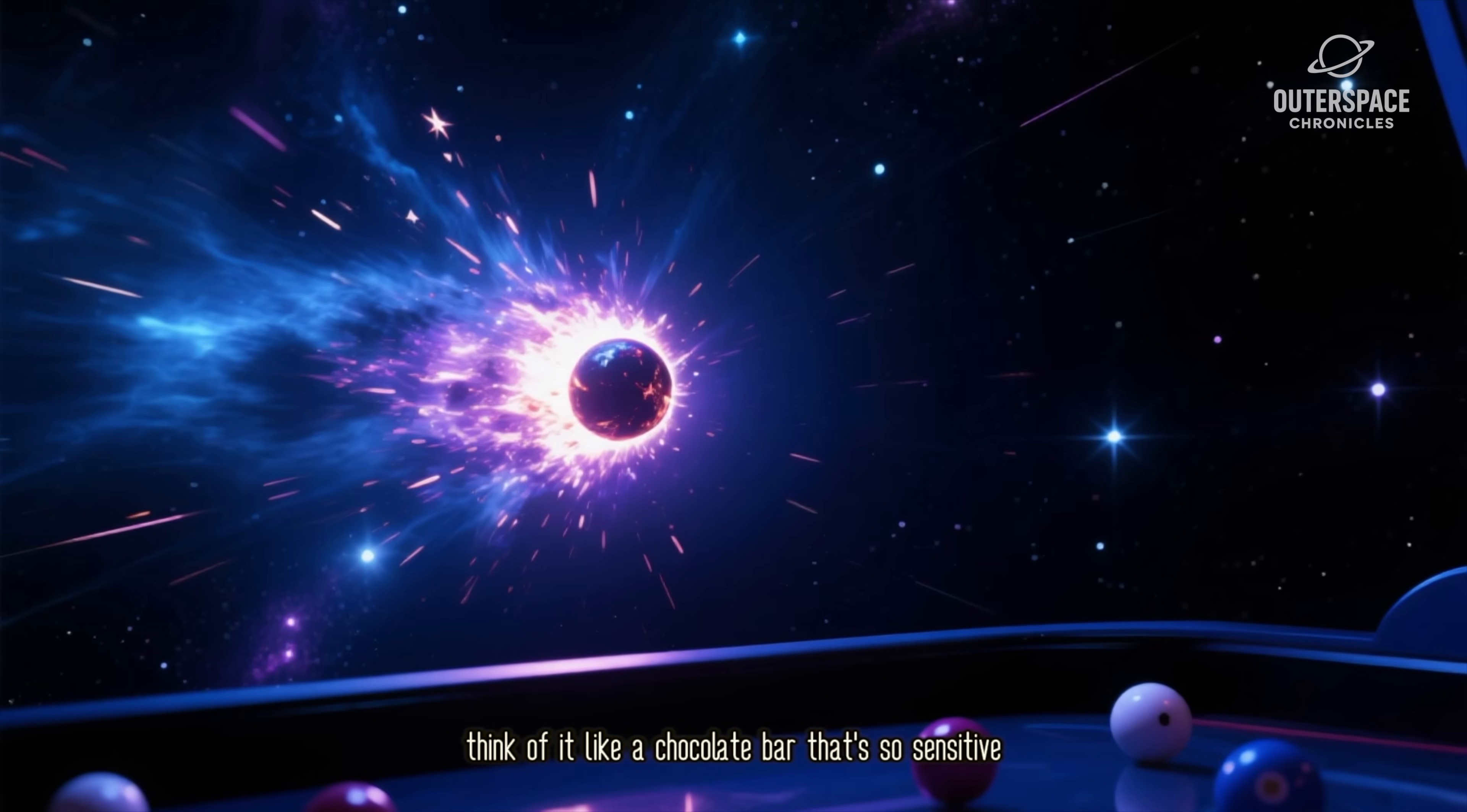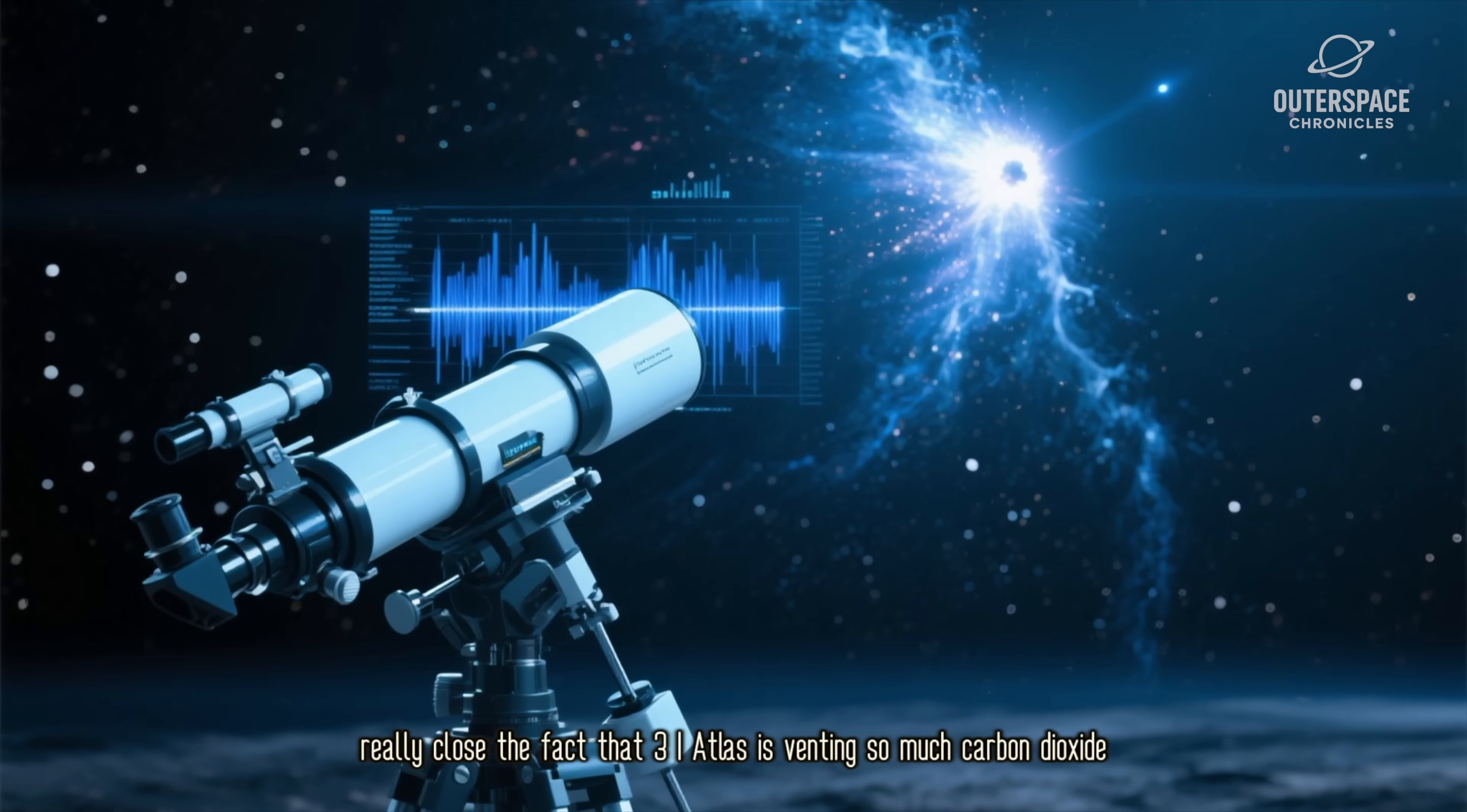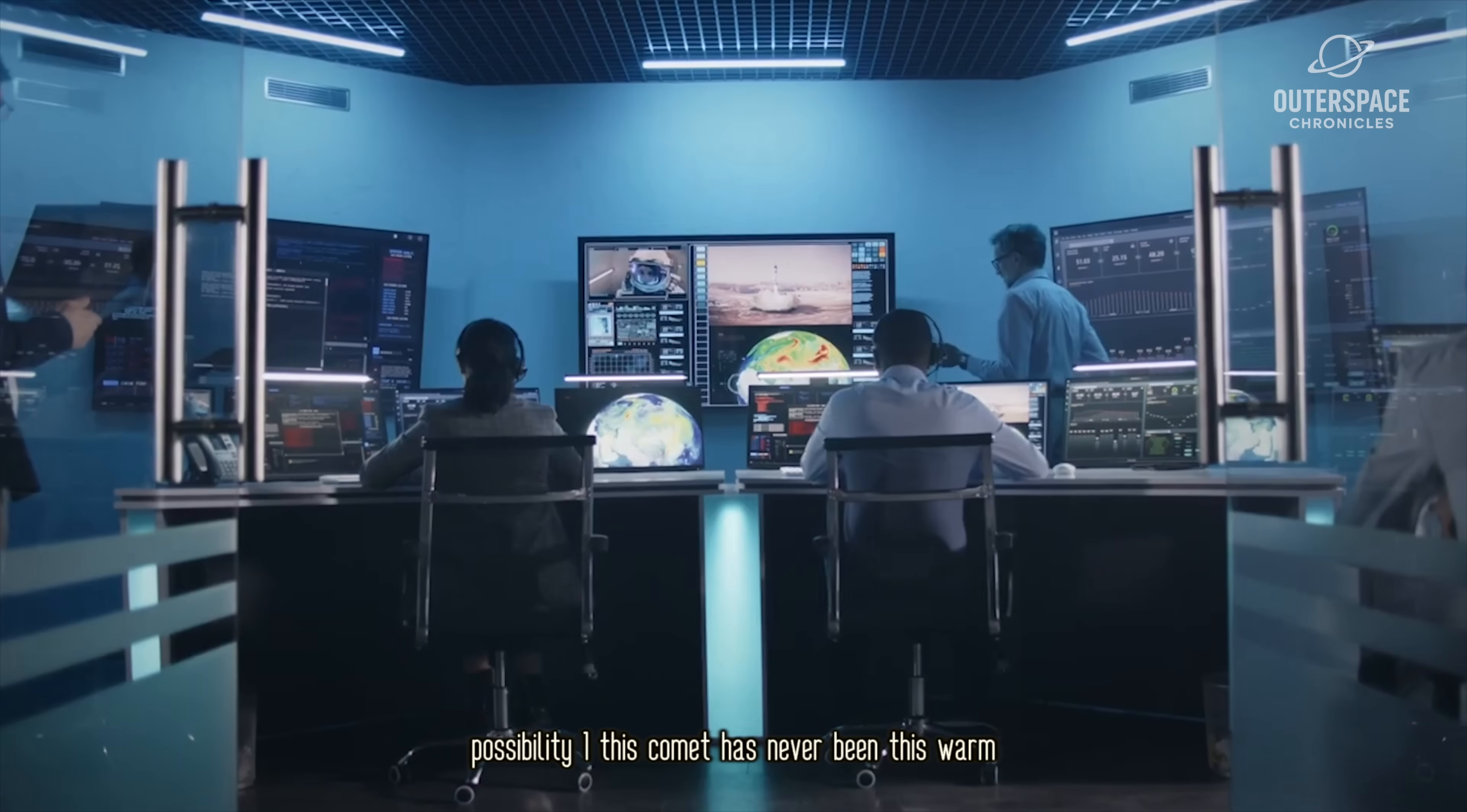Carbon dioxide is an incredibly volatile ice. Think of it like a chocolate bar that's so sensitive it melts just from the warmth of your hand, not even needing heat from the Sun. In the frigid depths of deep space, CO2 stays solidly frozen unless the Sun gets really close. The fact that 3I Atlas is venting so much carbon dioxide while it's still so far out is like seeing a frozen dinner start to steam while it's still in the supermarket's freezer aisle.